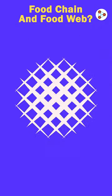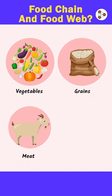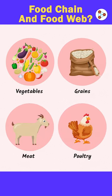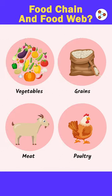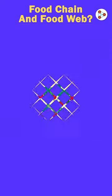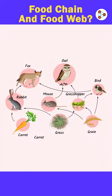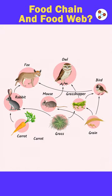But in reality, each one of us consumes different types of food like vegetables, grains, meat and poultry. Each food item that we consume is also dependent on another source for its own growth. For example, vegetables are dependent on the sun for photosynthesis. So ideally, every organism doesn't have a single food source but multiple sources.